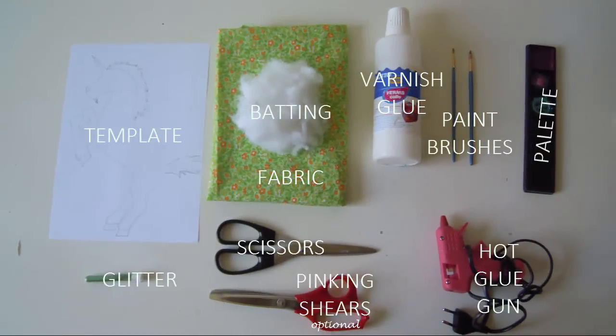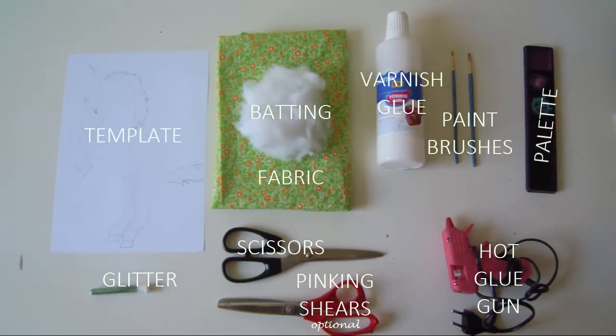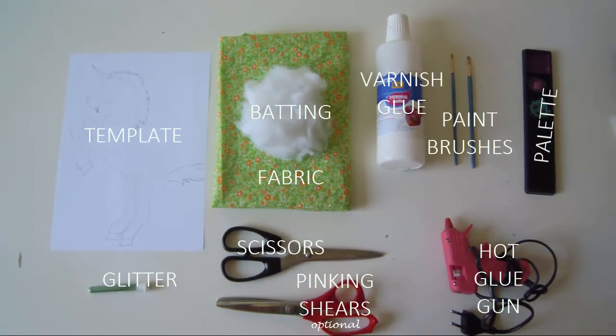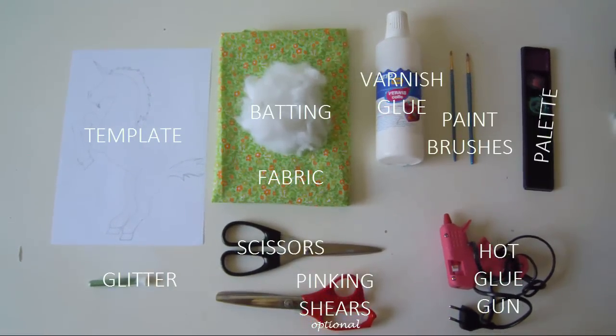You'll only need a couple of things. I'm using varnish glue, which is a kind of Mod Podge and dries clear, and I chose to use a sewing machine for this because it's more durable, but you could also use fabric glue.